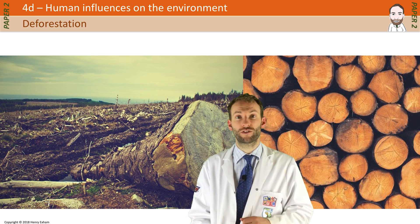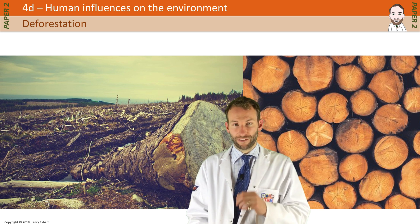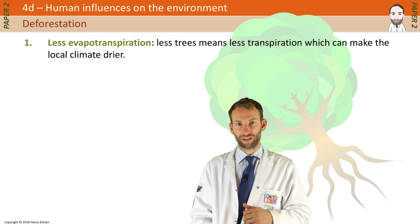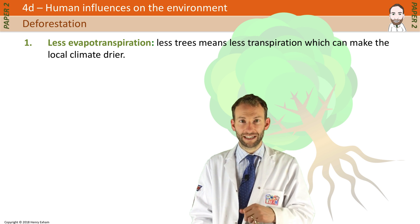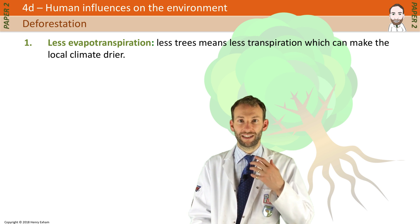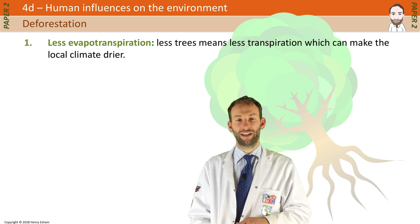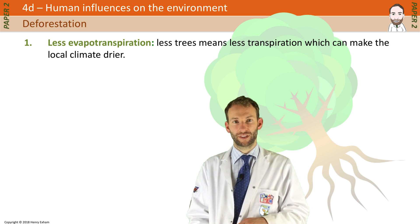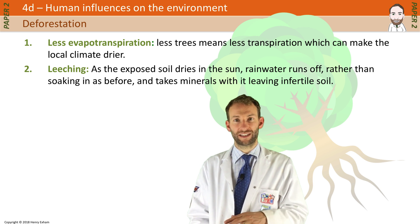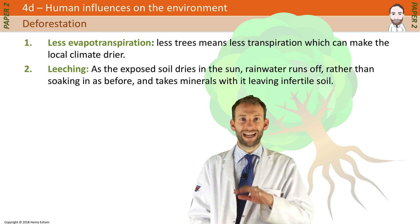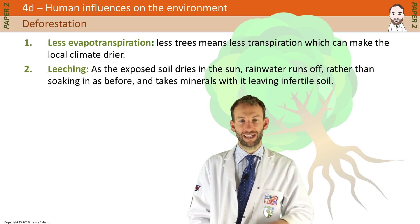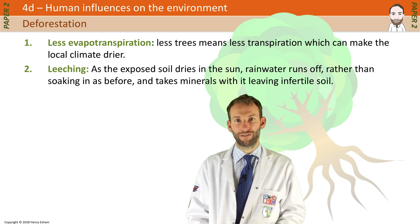This has had lots of consequences on the environment. First, number one: less evapotranspiration. Less trees means less transpiration, which means the local climate becomes a lot drier. Number two: leaching. As the exposed soil dries in the sun, rainwater runs off rather than soaking in, taking all the minerals with it — leaving very infertile soil.